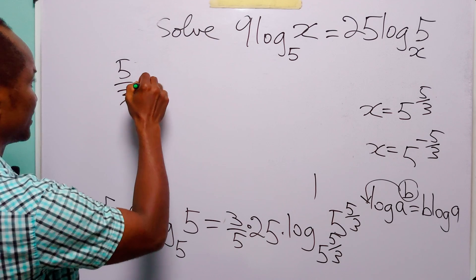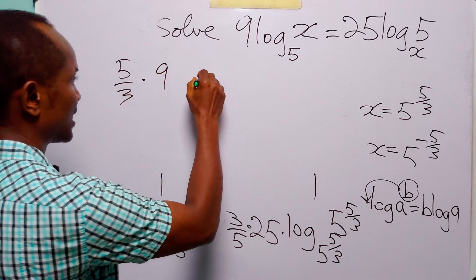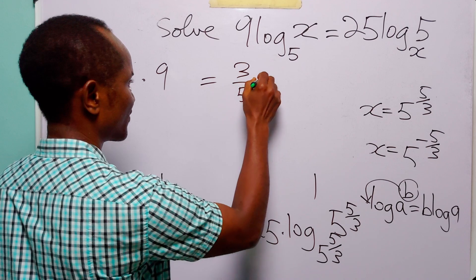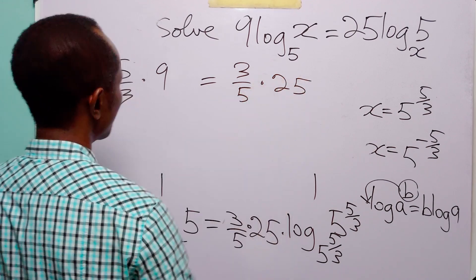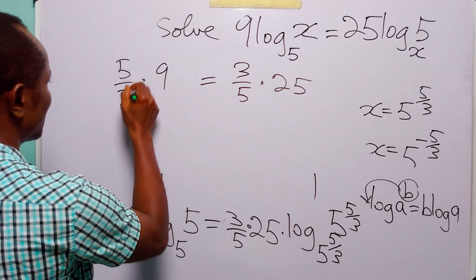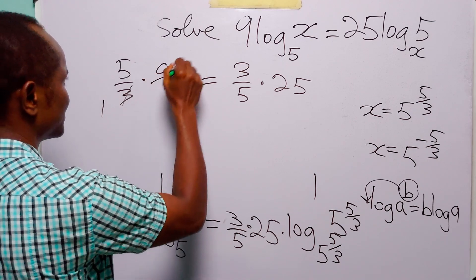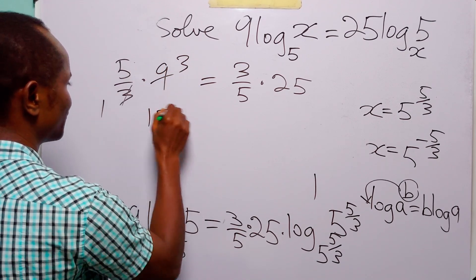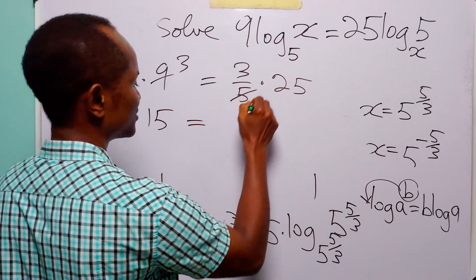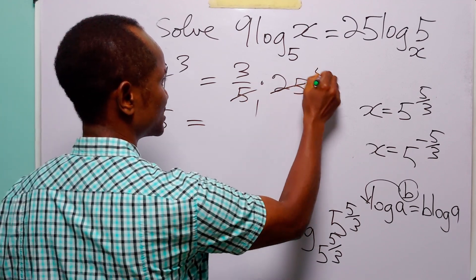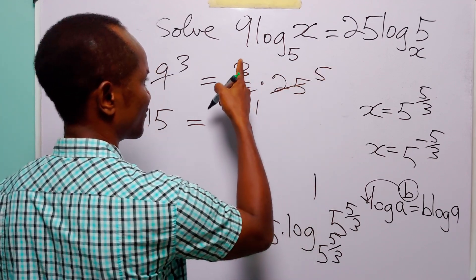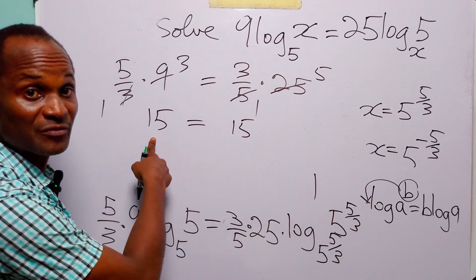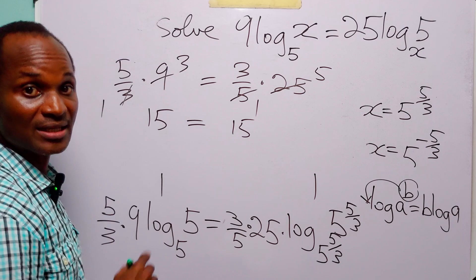...(5/3) × 9 = (3/5) × 25. Simplifying: 3 cancels into 3 to give 1, and into 9 to give 3; 5 × 3 = 15. On the right: 5 cancels into 5 to give 1, and into 25 to give 5; 3 × 5 = 15. So we have that 15 = 15.